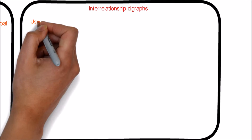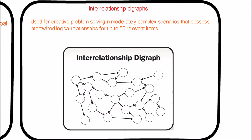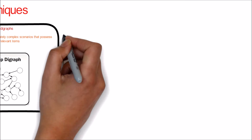Next is Interrelationship Diagraphs. This technique is used for creative problem solving in moderately complex scenarios that possess intertwined logical relationships for up to 50 relevant items. As shown in the example, each reason has been mentioned inside a circle and all the related reasons are connected by an arrow.